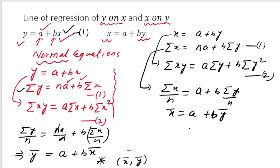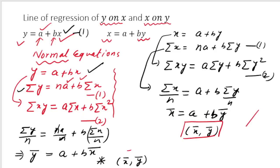Since (x̄, ȳ) is a common point on both regression lines — the line of regression of y on x and the line of regression of x on y — these two lines intersect at the point (x̄, ȳ). This is a very important concept that we will use when solving problems.